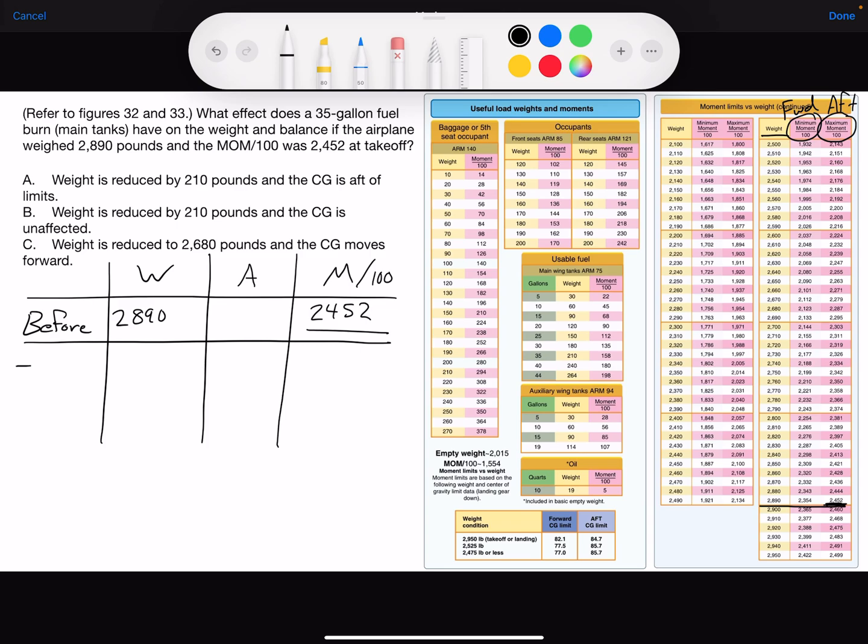Now we're going to burn fuel, and that's 35 gallons. Fuel weighs 6 pounds per gallon, so we'll multiply 35 and 6 to give us a fuel weight of minus 210 pounds. Now right here I can see fuel on the table, main wing tanks, I have an arm of 75. So if you take the weight and multiply it by the arm of 75 inches, that will give you the moment of 15,750.